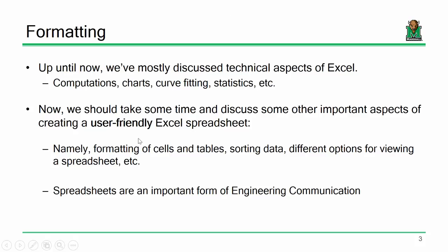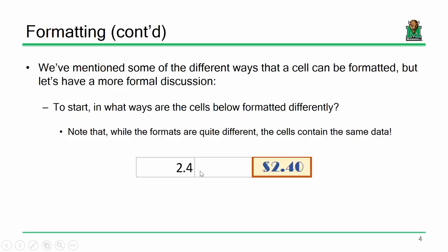We're going to be talking about how to format cells, create tables with centering, and use different colors to make it easier to visualize rows. We'll also look at some different viewing options. Just as an illustration of how different formatting can make things seem, consider these two numbers: 2.4 in plain Calibri text versus $2.40. They appear different even though it's the same underlying data, so small adjustments to Excel can have a big effect on how things appear.